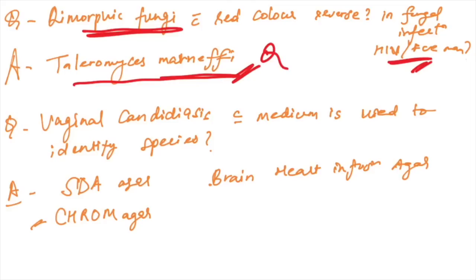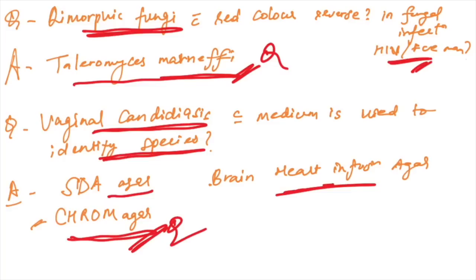Vaginal candidiasis - which medium is used to identify the species? Options were SDA agar, brain heart infusion agar, and chrome agar. Chrome agar is used and is the answer to diagnose vaginal candidiasis species.